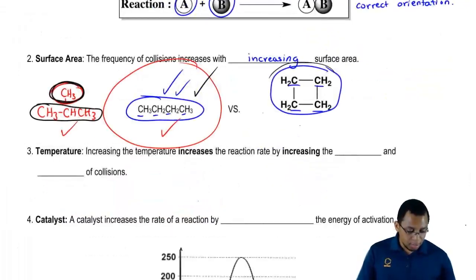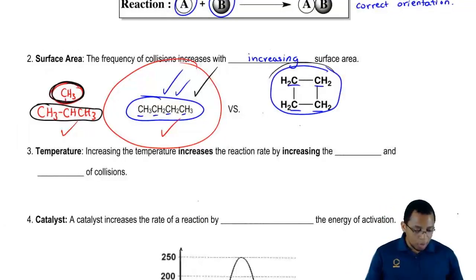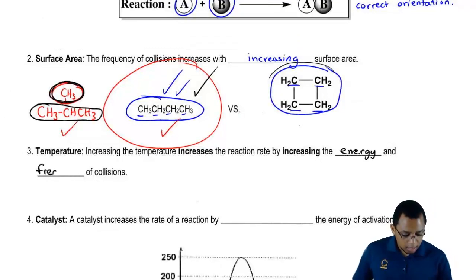The next factor we're going to say is temperature. We're going to say increasing the temperature increases the rate of the reaction by increasing the energy and frequency of collisions.